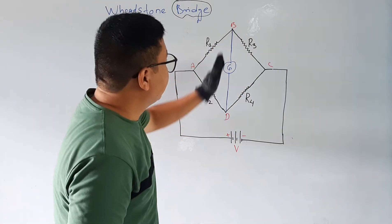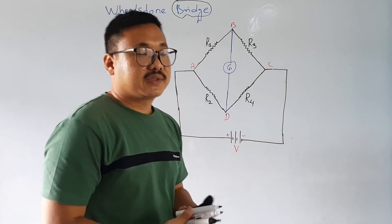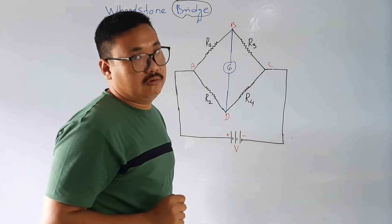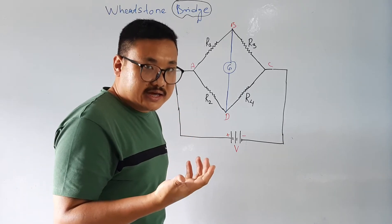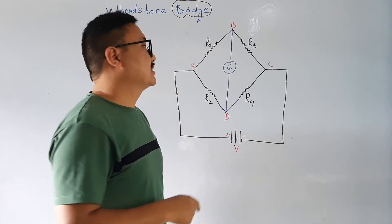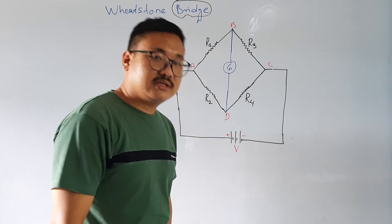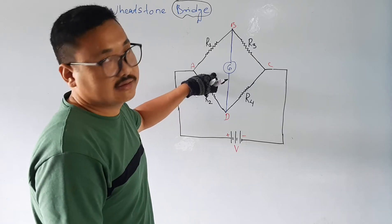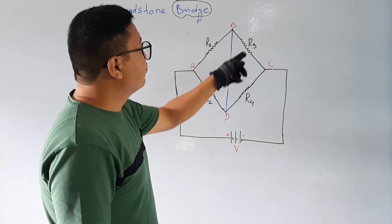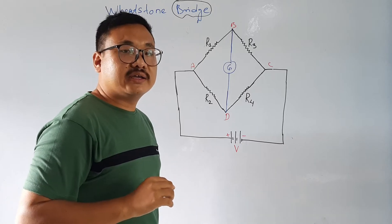Points B and D are connected with a galvanometer G. This connection between B and D through the galvanometer is called the bridge. Through this galvanometer, the current flows, and whether there is flow of current or not is detected by the galvanometer — because the galvanometer is a device to detect current.